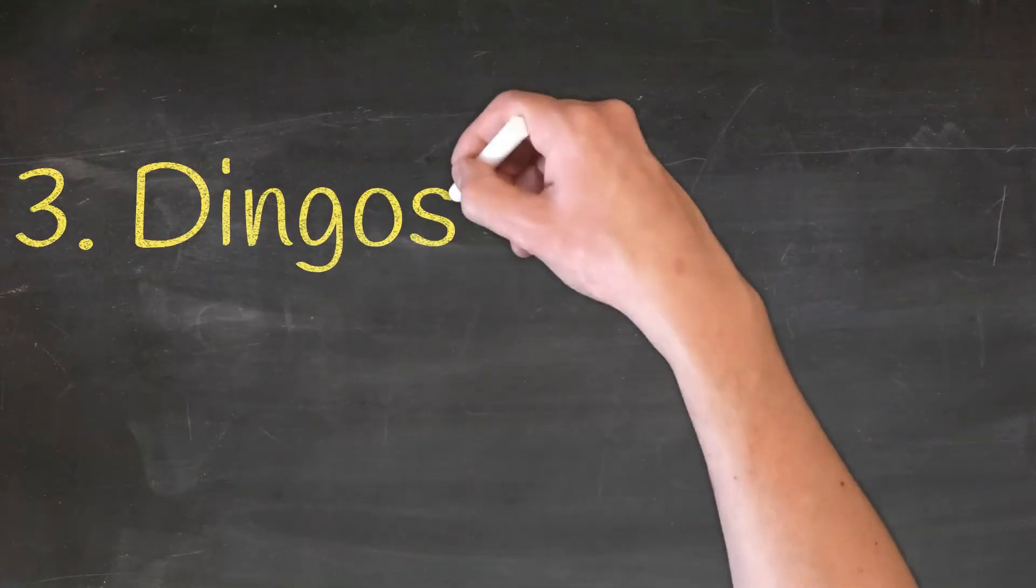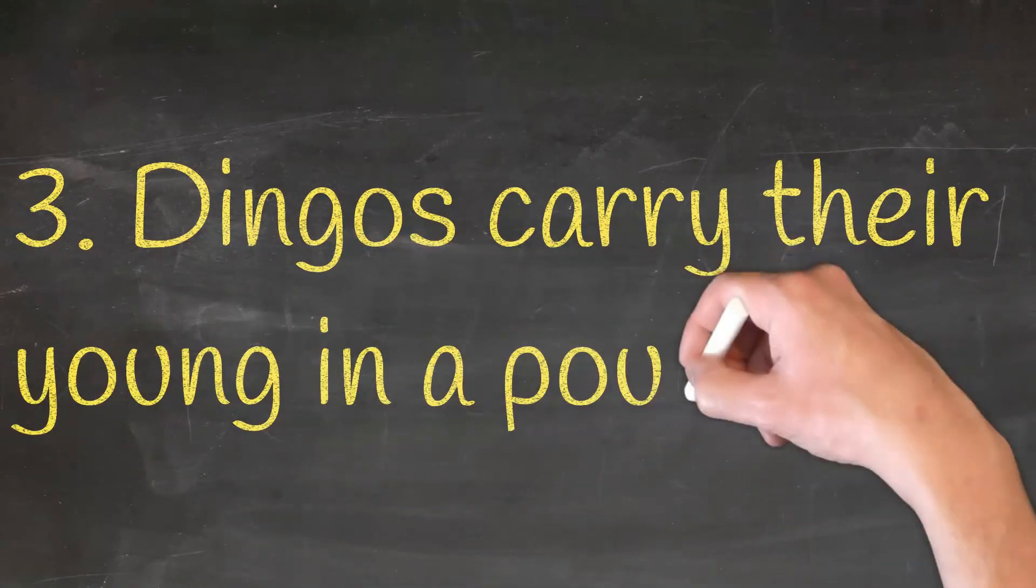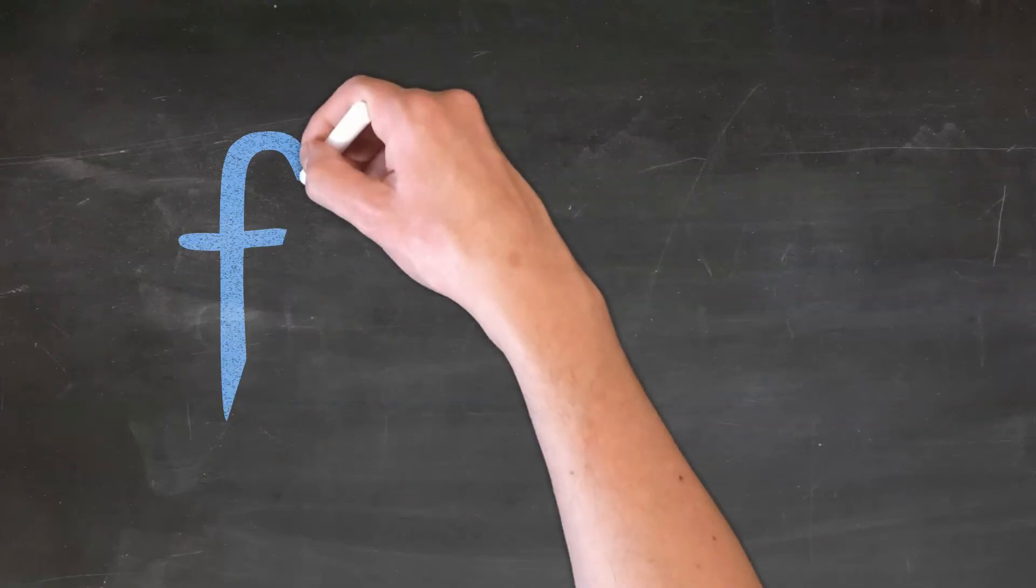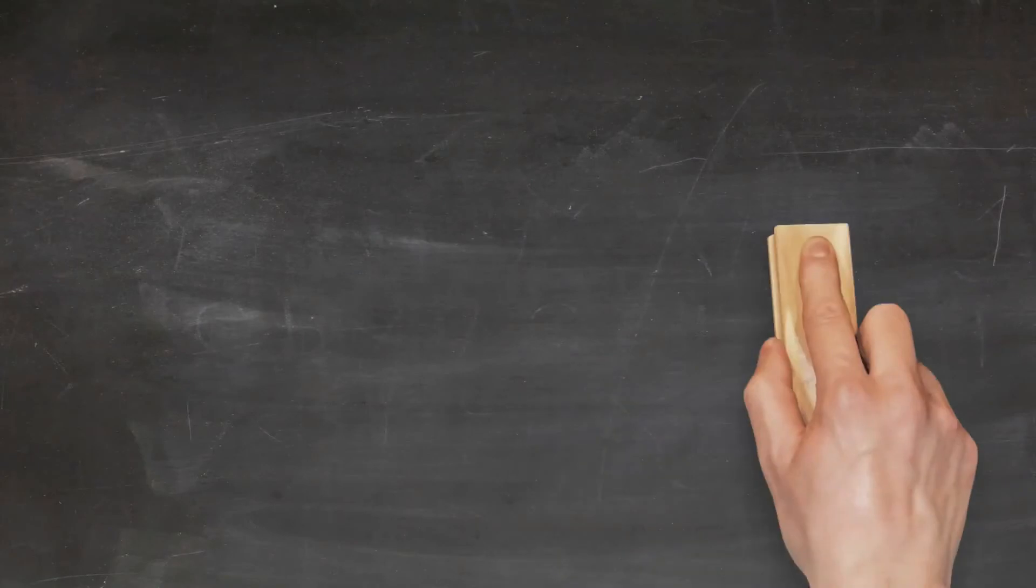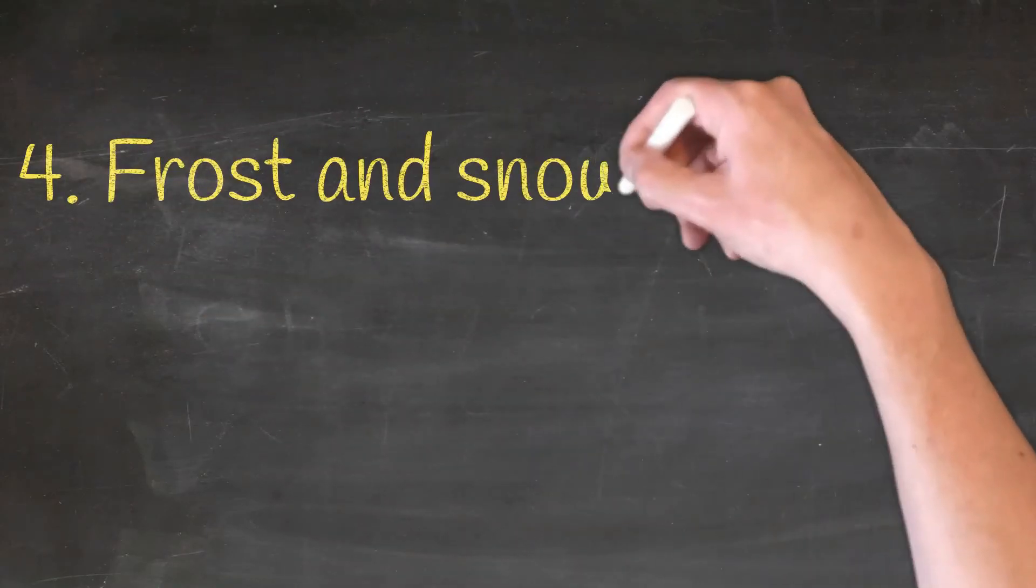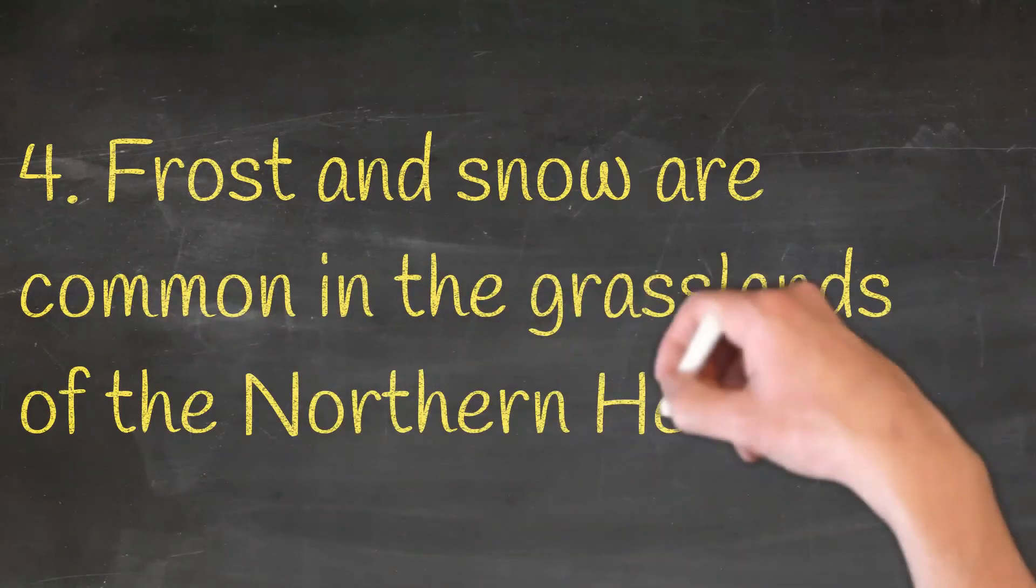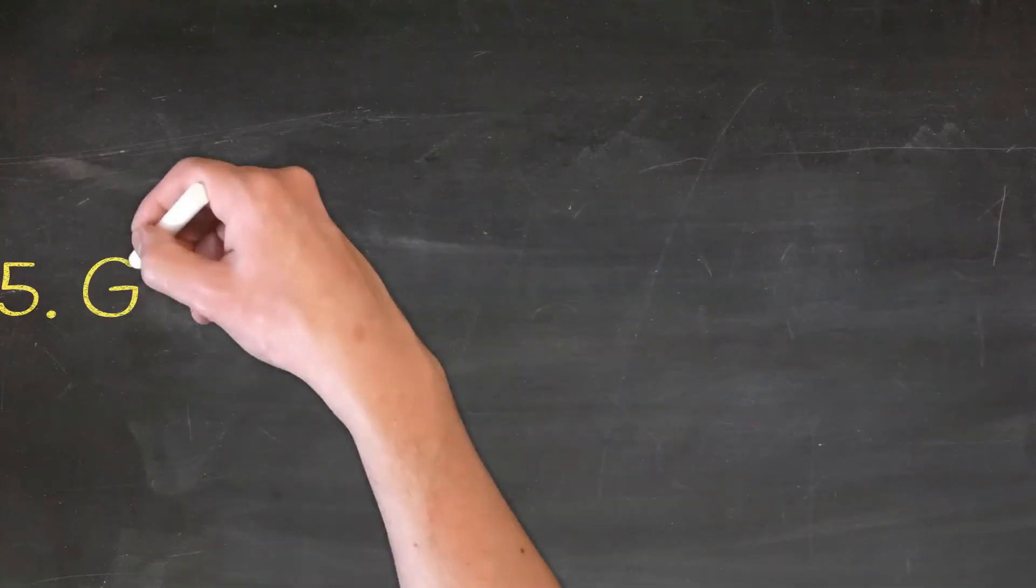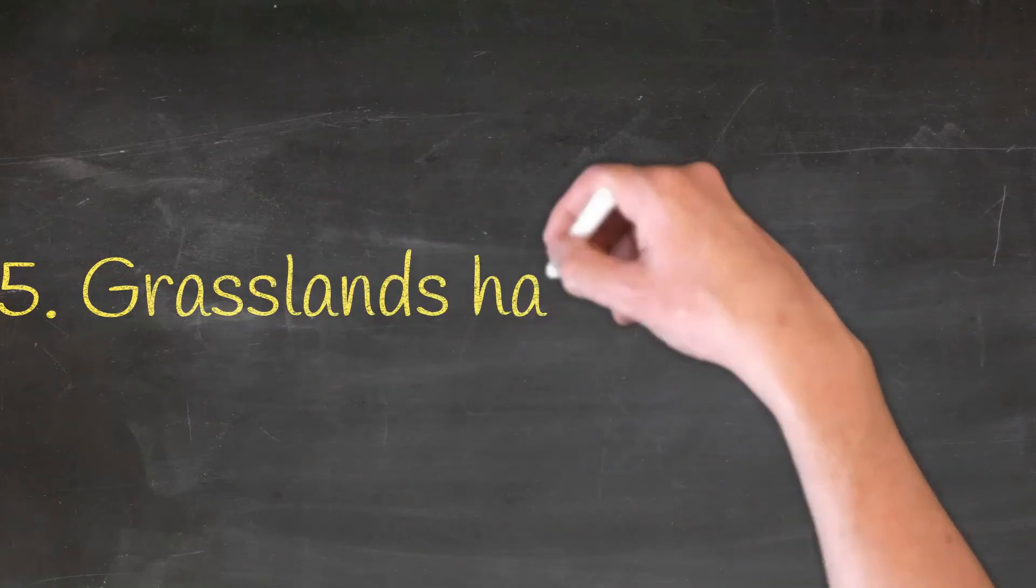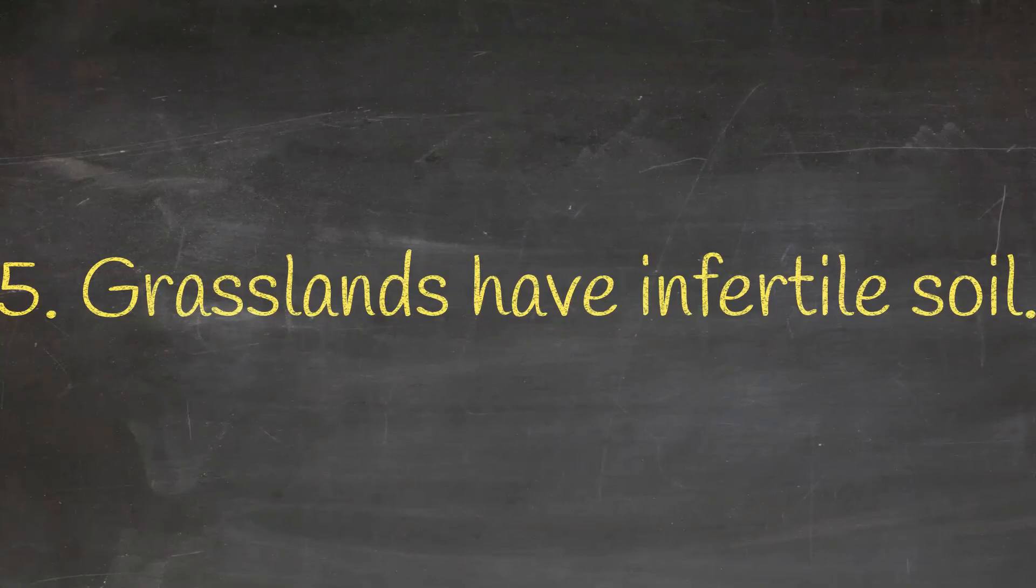Dingoes carry their young in a pouch. This statement is false. Frost and snow are common in the grasslands of the northern hemisphere. And it's true. Grasslands have infertile soil. This statement is false.